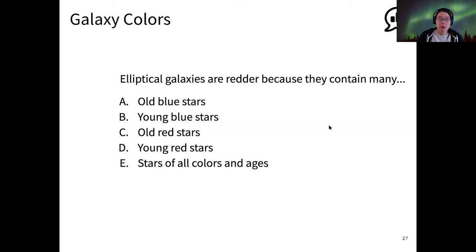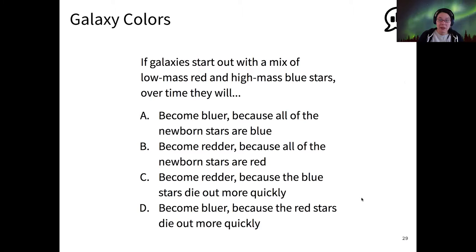Okay, so why are elliptical galaxies so much redder? Is it because they contain old blue stars, young blue stars, old red stars, young red stars, or all kinds of colors? And I see 100% of votes for C, that the ellipticals are redder because they contain many old red stars. That's exactly right. So they used to contain all kinds of stars, but then what happened? So galaxies start out with a mix of low mass and high mass stars. They're no more likely to form high mass blue stars as low mass red stars. But what happens over time?